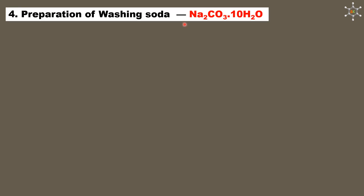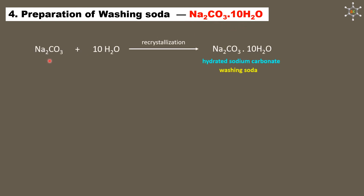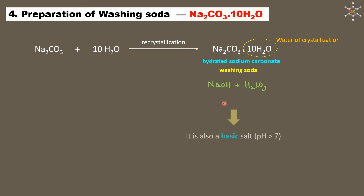Washing soda (Na2CO3·10H2O, hydrated sodium carbonate) is prepared by dissolving sodium carbonate salt in water and allowing it to undergo recrystallization. The 10 water molecules present per Na2CO3 are called the water of crystallization. Na2CO3 is made up of the strong base sodium hydroxide and the weak acid H2CO3; since the strong component is basic, washing soda is also basic with pH greater than 7.